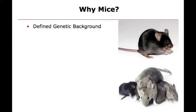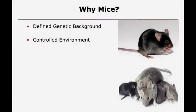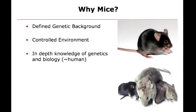To recapitulate: we've got a defined genetic background, so we've removed one of the major problems in human studies. They're all the same, so we know if one mouse gets a disease and another doesn't, there's a difference in their genome. We can control their environment — it's very difficult to say to people you're only allowed to eat this food for the rest of your life. We have an in-depth knowledge of their genetics and their biology.